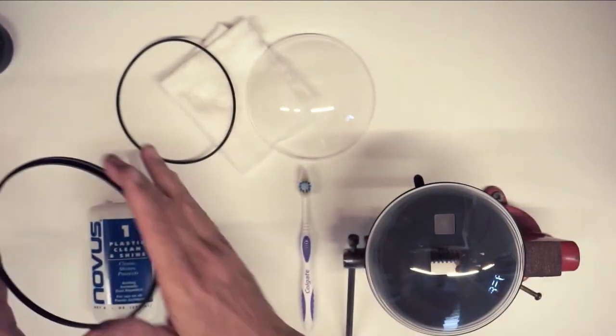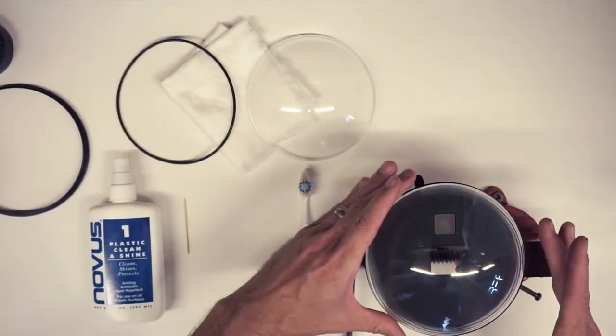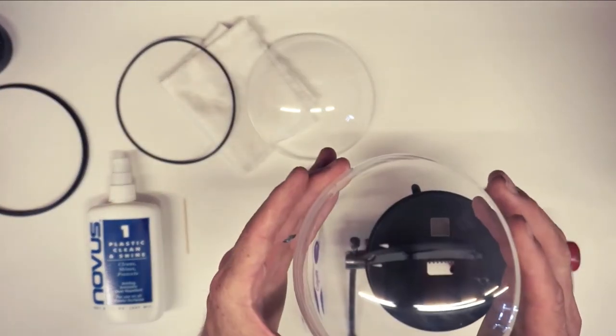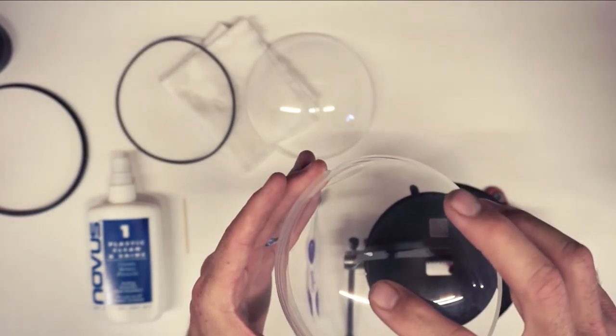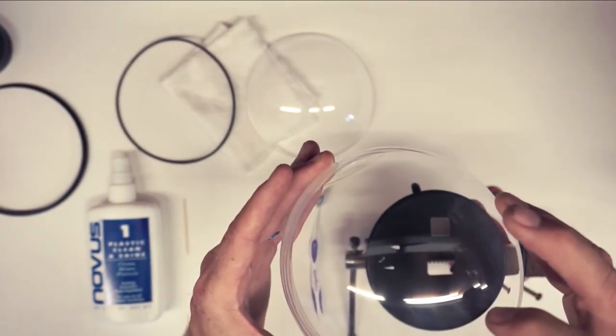Take the retaining ring, set it off to the side, remove your damaged acrylic. You can actually see some pretty big scratches on this one. It was bitten by a shark. This was Jarrett Lau's dome.